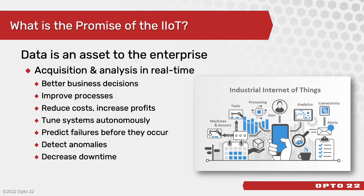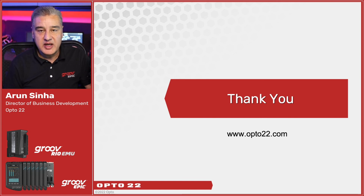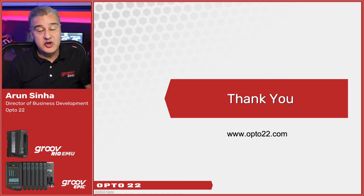With that, I'd like to leave you with one final thought. What is the promise of the IoT? It's data. Data can be an asset to the enterprise. Energy and power data can help you reduce operational costs, improve machine health, and be a part of your digital transformation journey. Hopefully I've given you some ideas on why you might consider energy and power monitoring and how to go about doing that. If you'd like more information, please visit our website where you can also engage with an engineer over online chat, email, or phone. Thank you.